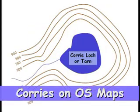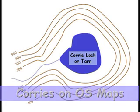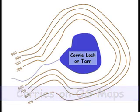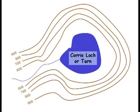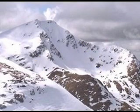On an Ordnance Survey map, a corry has a distinctive horseshoe shape. The contour lines are close together on three out of the four sides. Sometimes the corry loch may be shown in the middle of the corry.